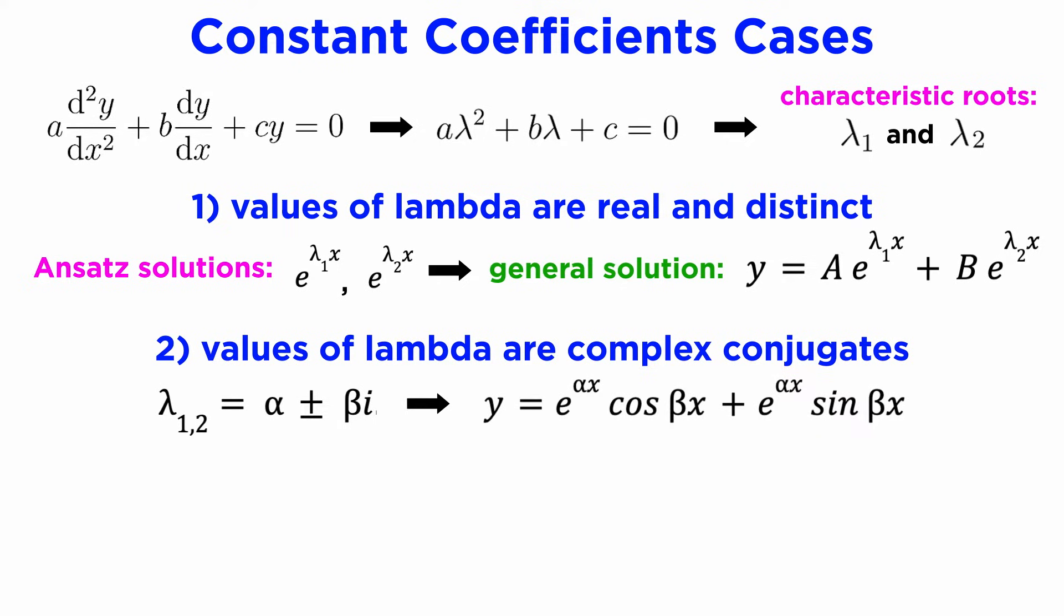Using some complex number arithmetic, which we'll skip, we can show that the appropriate ansatz solutions are y1 equals e to the alpha x times cosine of beta x, and y2 equals e to the alpha x times sine of beta x. So, by superposition, our general solution for the case of complex roots is y equals e to the alpha x times the quantity A times cosine of beta x plus B times sine of beta x.